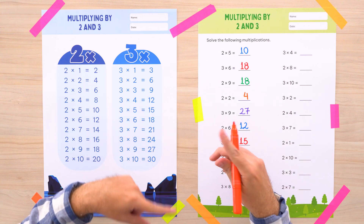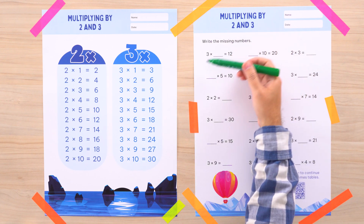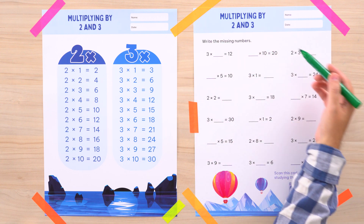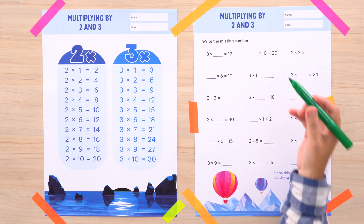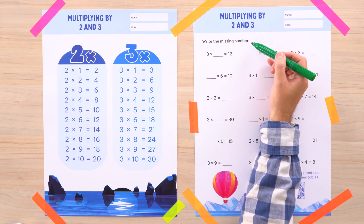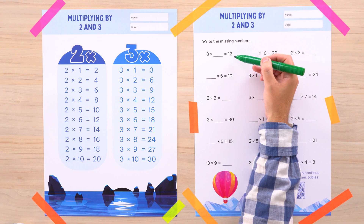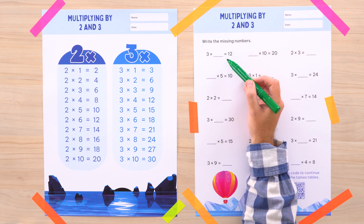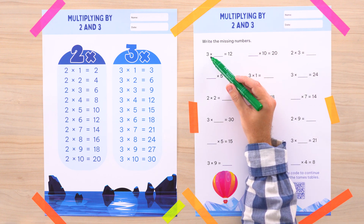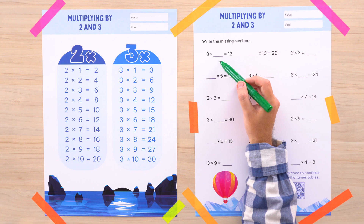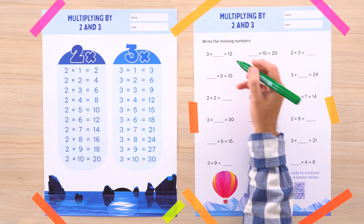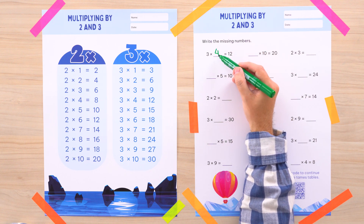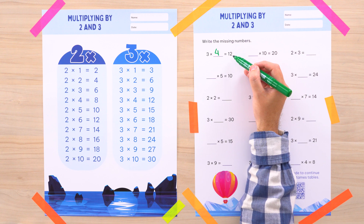Let's continue with more exercises. I will only solve the problems of the first column — the other columns will be for you. In this section we need to write the missing numbers. In the first problem, 3 multiplied by one number gives us 12. The answer is 4, because 3 times 4 gives us 12.